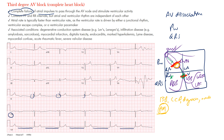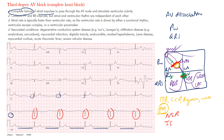The PR intervals are not constant — they vary, confirming the P waves are not related to the QRS complexes. The P waves are going at their own rate from the sinus node, contributing to what looks like a normal sinus rhythm, while a separate rhythm comes from the ventricles. The narrow QRS complexes seen are likely originating from the conduction system — what we'd call a junctional escape rhythm.